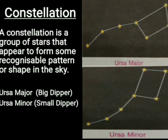If we observe some bright and prominent stars on a clear night sky, we will observe that some of these stars appear to form some kind of pattern that appears to resemble some familiar figure. Such a group of stars is called a constellation. A constellation is a group of stars that appear to form some recognizable pattern or shape in the sky.